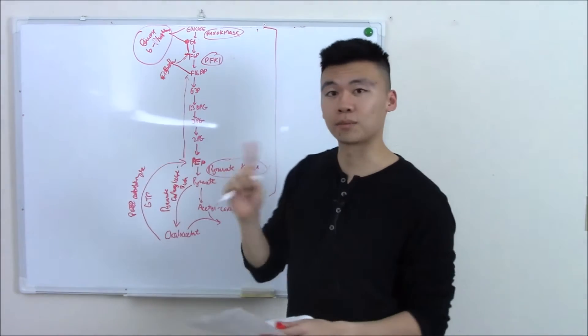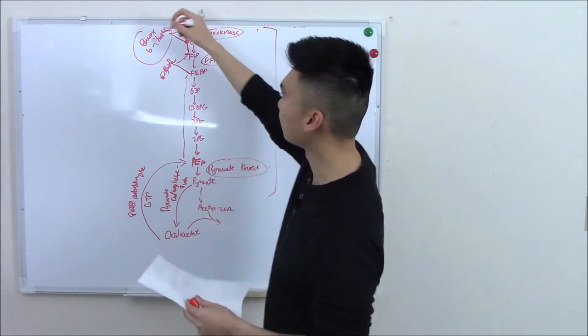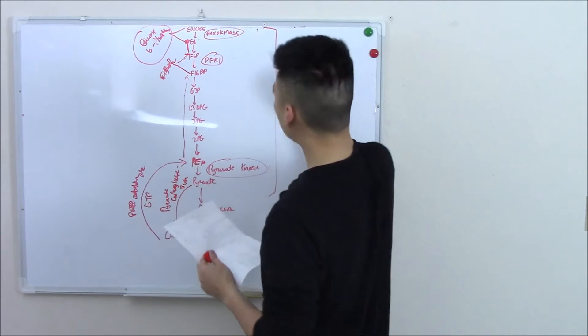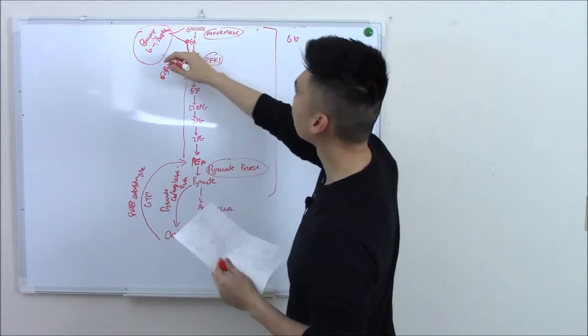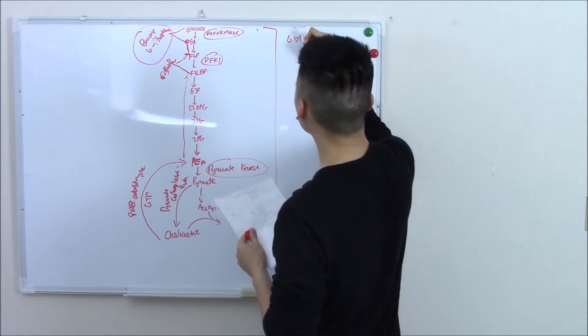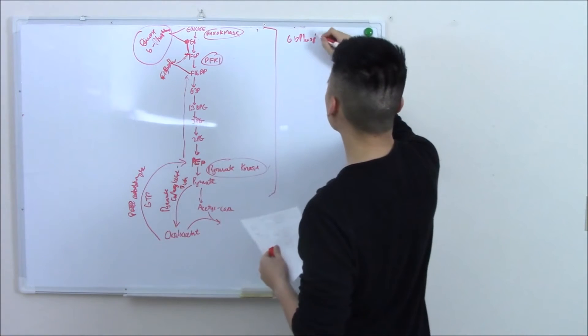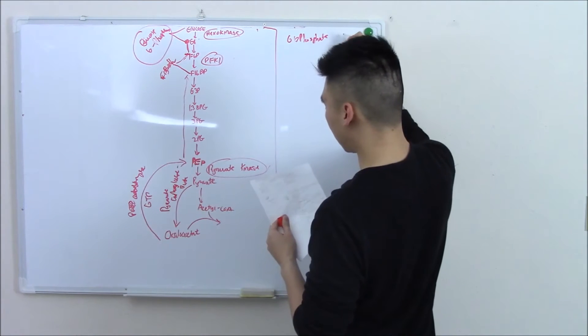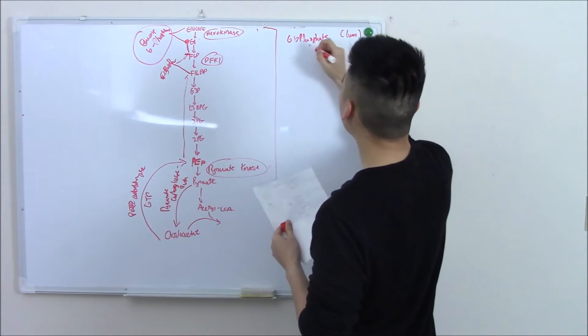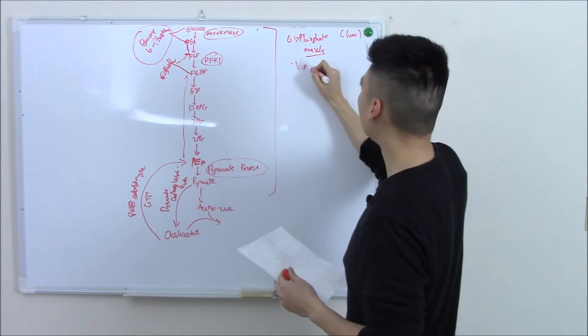Now there's one big problem that can arise in patients with gluconeogenesis, and that is if they're deficient in glucose 6-phosphatase. If they're deficient in glucose 6-phosphatase, they can't take that phosphate group off, they can't release glucose. Now this enzyme is found in your liver but it's not found in your muscles.